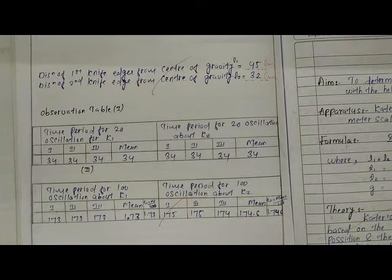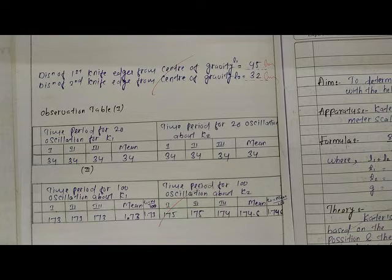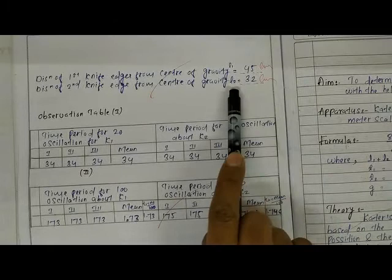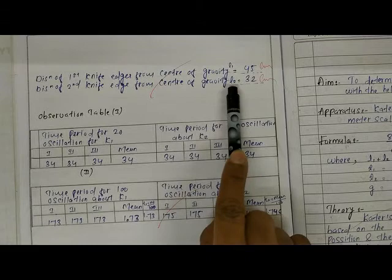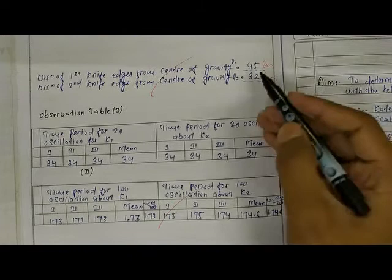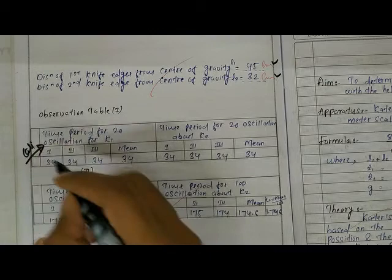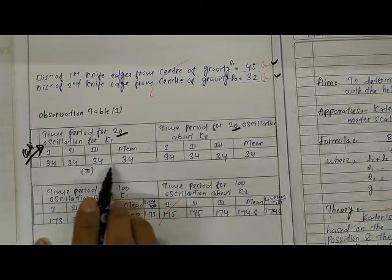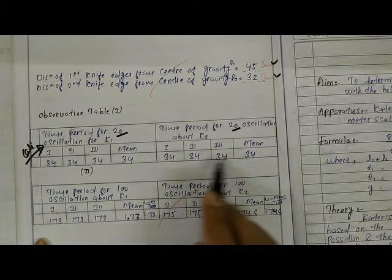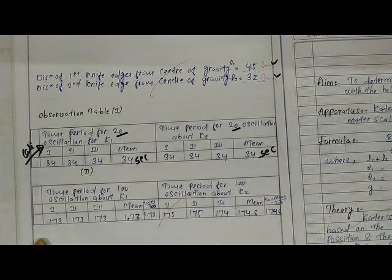Now, in the calculation part: measure the distance of the first knife edge from the centre of gravity — L1 = 45 cm — and the second — L2 = 32 cm. For the calibration check with 20 oscillations, the pendulum is well calibrated: all readings show exactly 34 seconds about both K1 and K2.